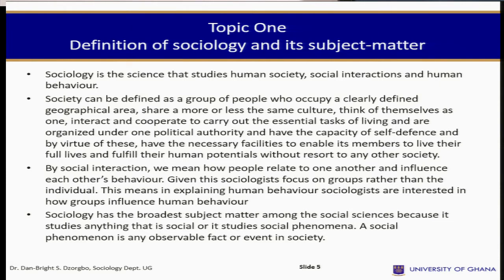Sociologists are interested in how the group influences the individual, in contrast with psychologists who are more interested in the individual himself or herself. Sociology is one of the social sciences — those subjects that study human behavior in society — which include, in addition to sociology, political science, economics and psychology.